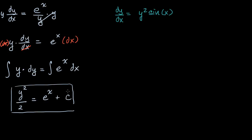So once again we want to separate our y's and our x's. So let's see, we can multiply both sides times y to the negative two power.